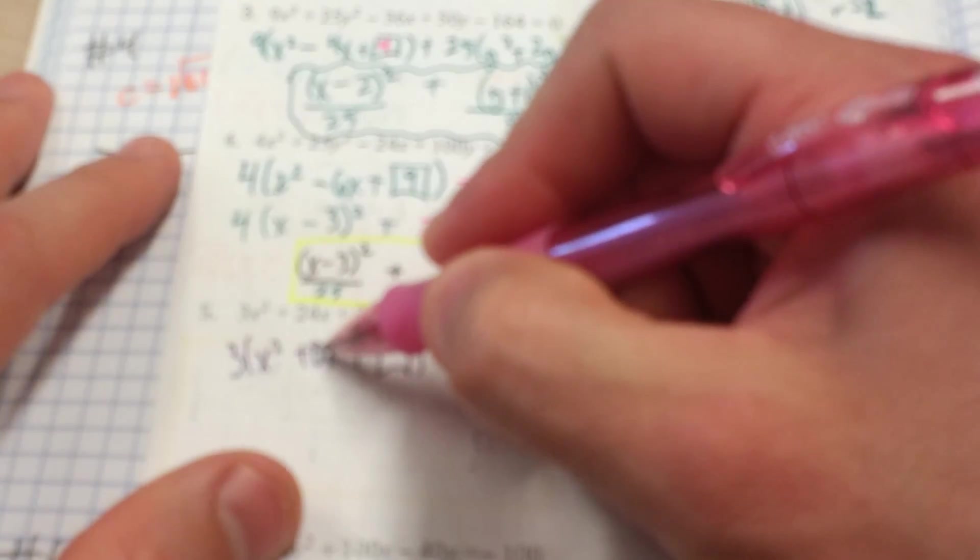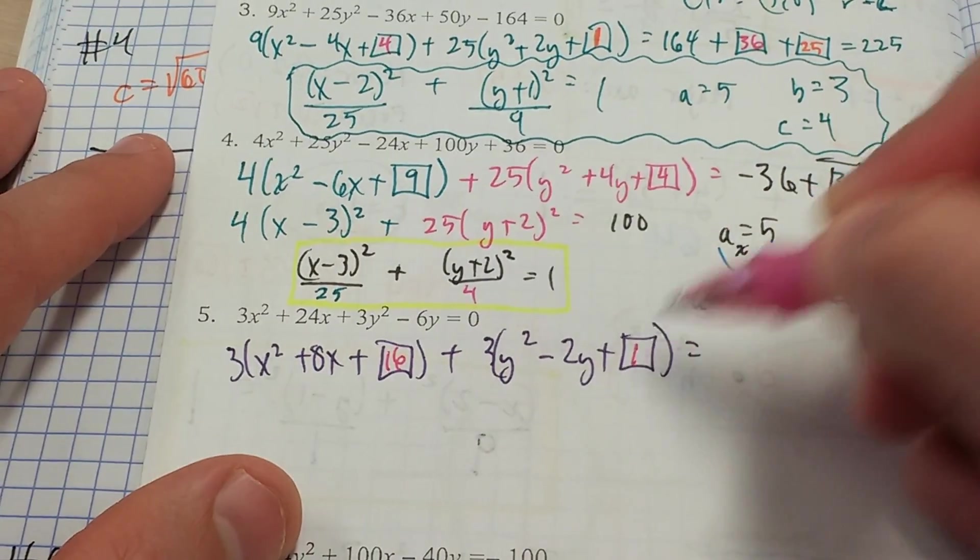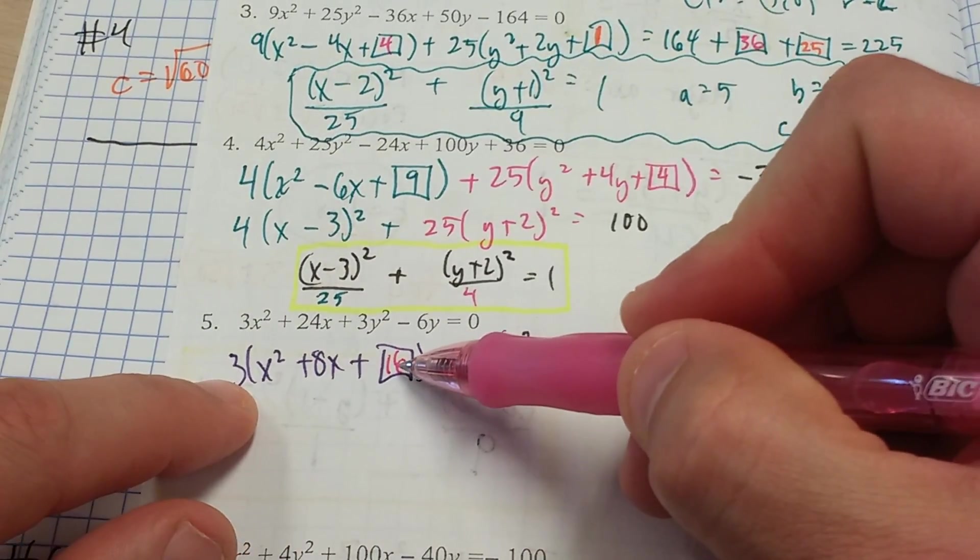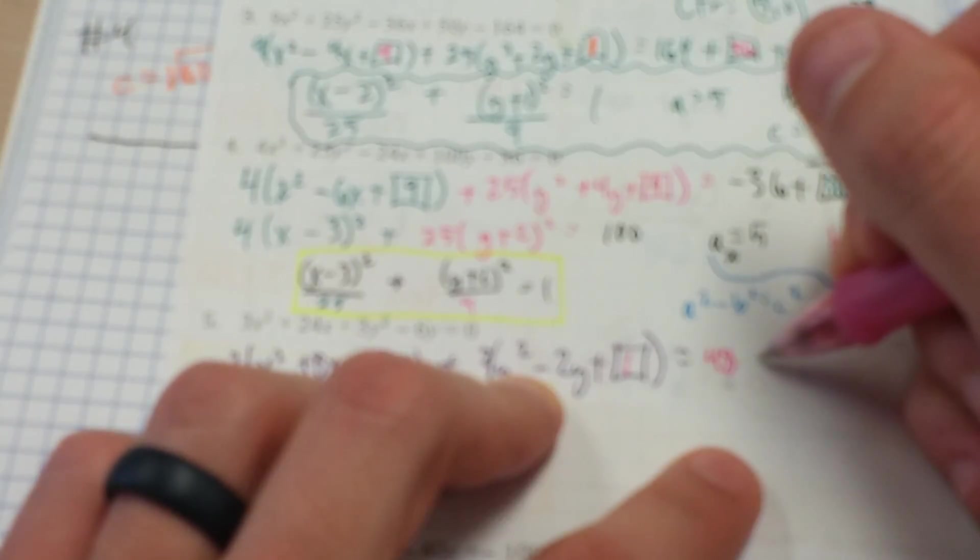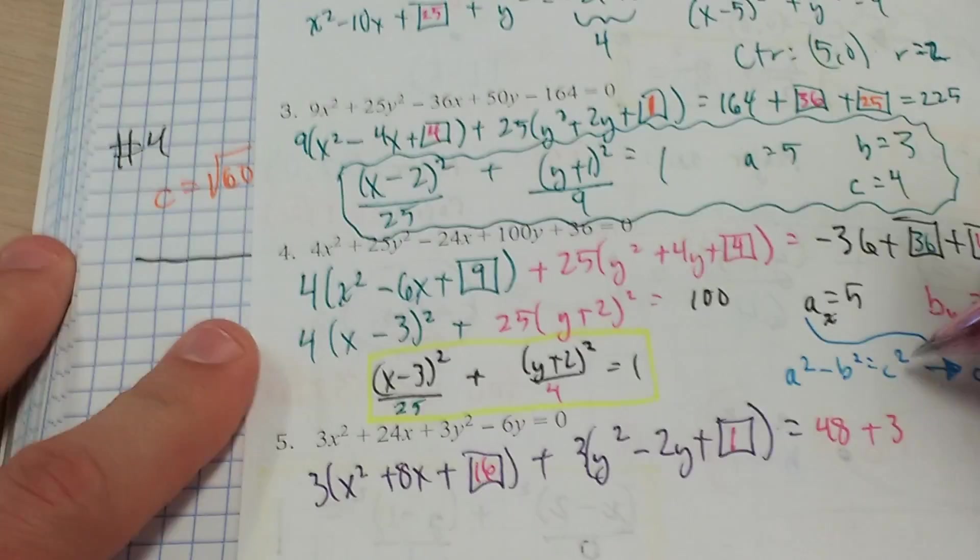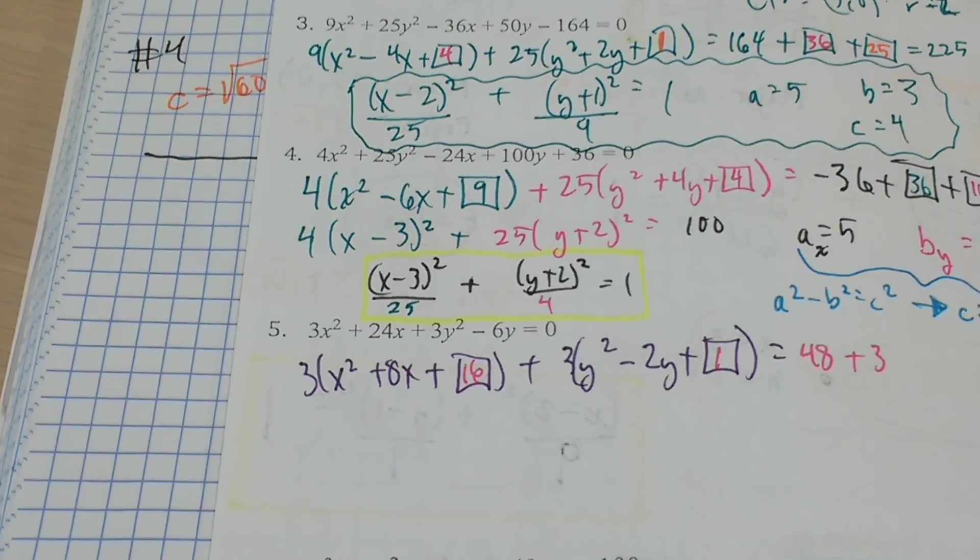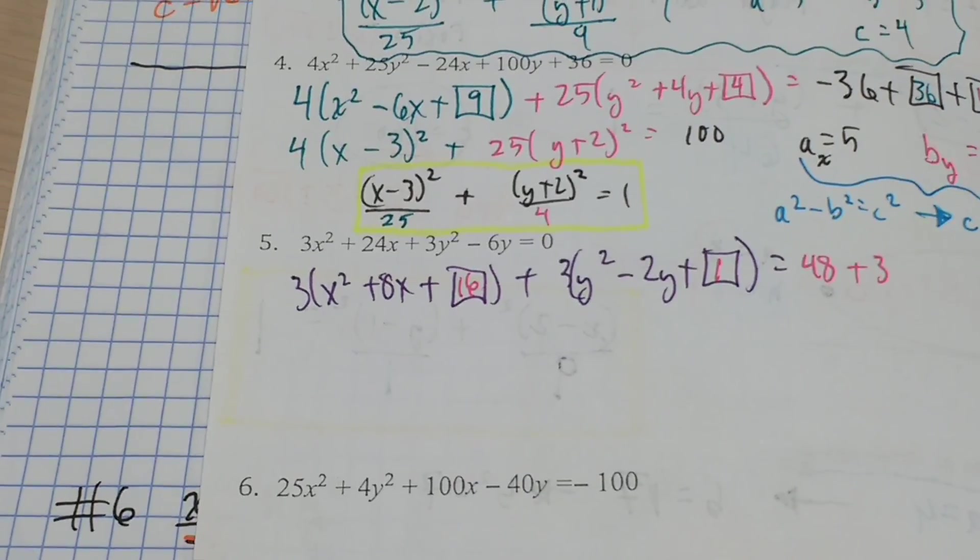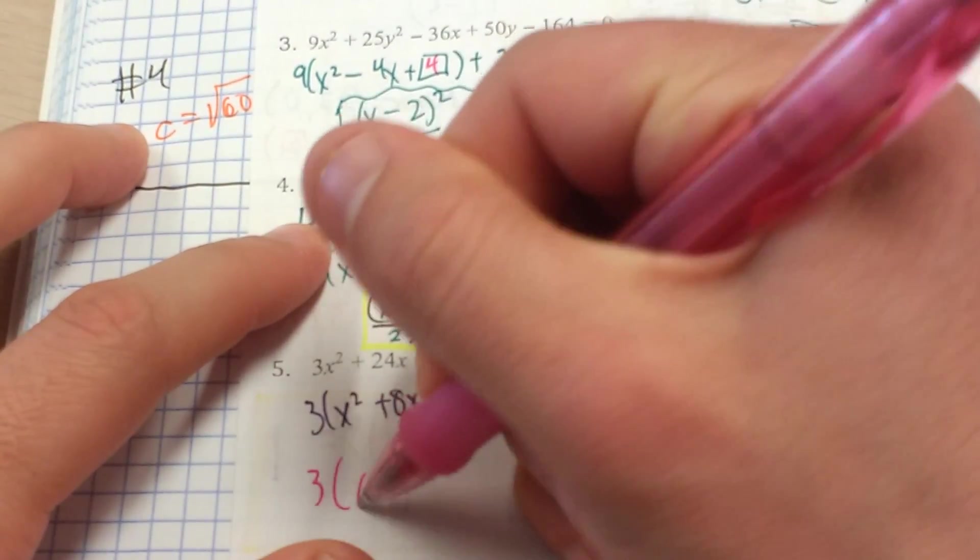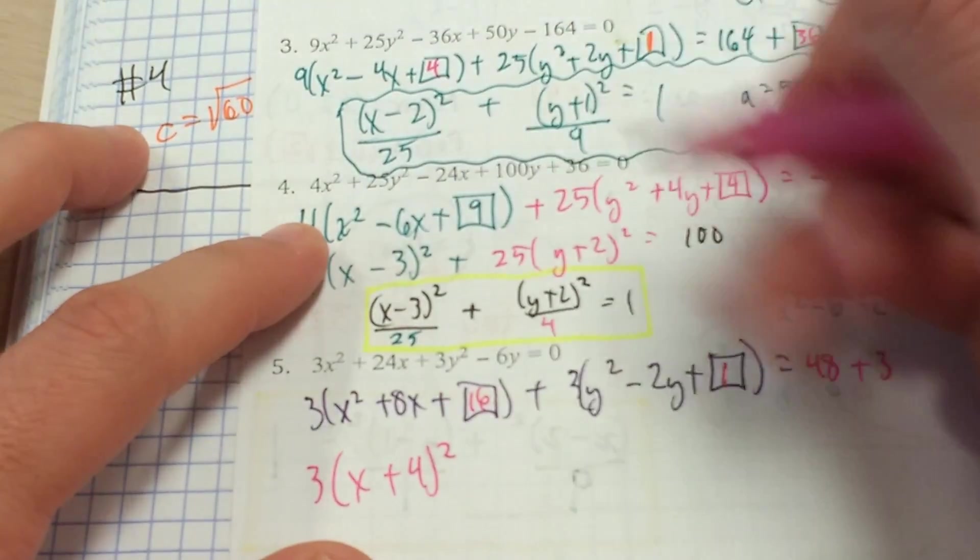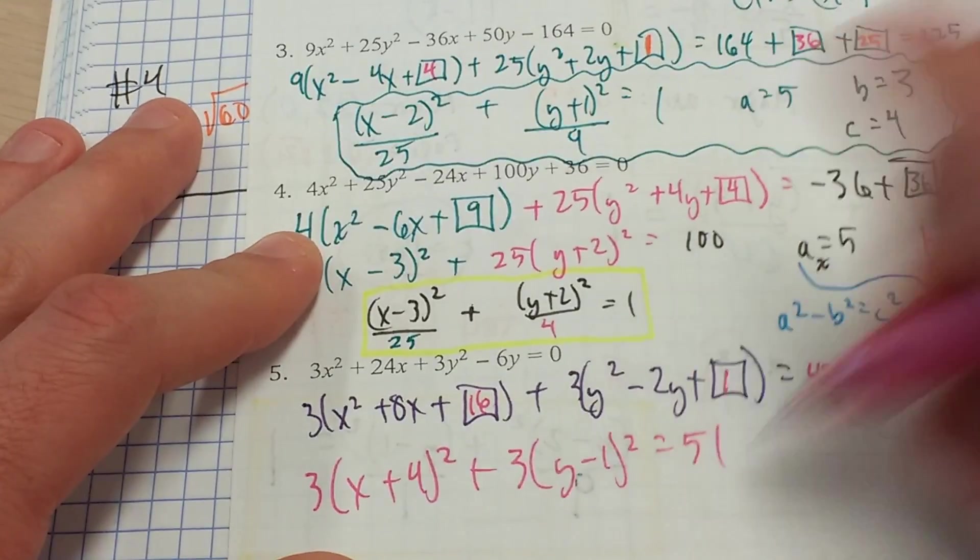What are we adding here? Half of 8 squared. So 16. Half of 2 squared. So 1. But I added a 3 times 16, which is 48. I added a 3 times 1, which is 3. So it's not going to be a pretty circle. It's going to be a circle nonetheless. So I've got 3 times x plus 4 squared plus 3 times y minus 1 squared equals 51.